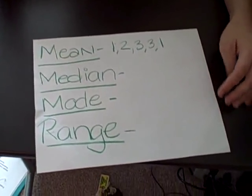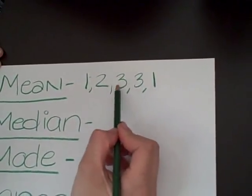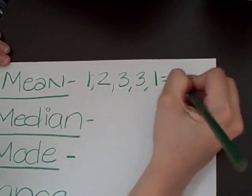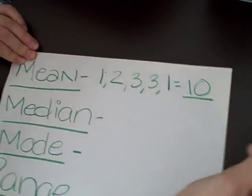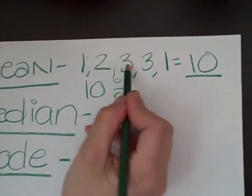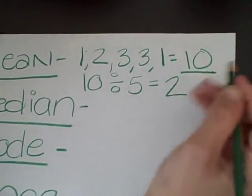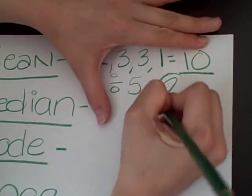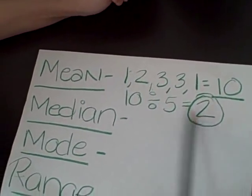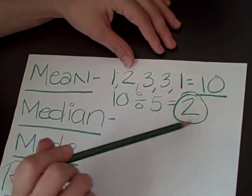The other ones, you only have to do just one step. So, one, two, three, four, five, six, seven, eight, nine, ten — that's ten, your first step. Now, ten divided by five is two. So your mean would be two. Mean is mean because it makes you do two steps to get the answer.